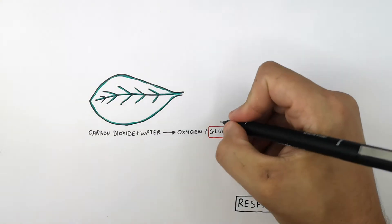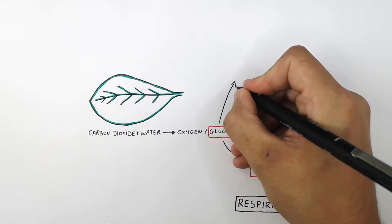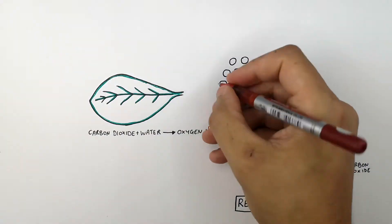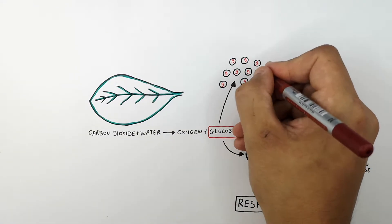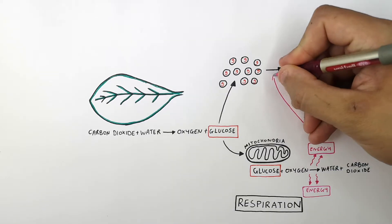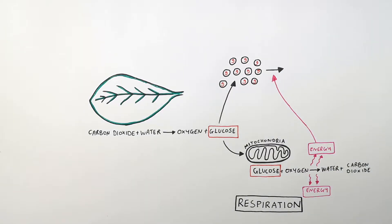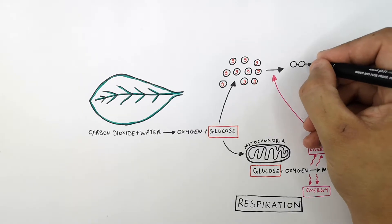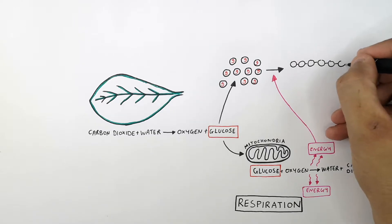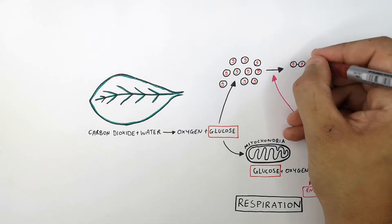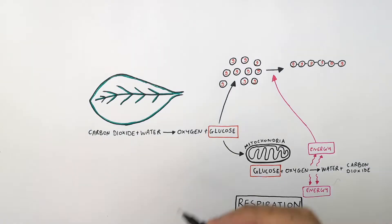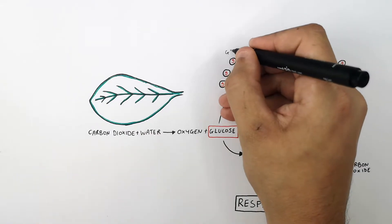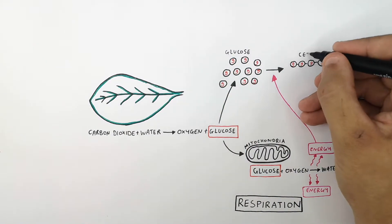Let's now describe how glucose is used to form other substances in the plant. What I'm drawing here are glucose molecules — these are monomers of glucose. The energy released by the mitochondria during respiration is used to convert glucose into the polymer cellulose, by making bonds between glucose molecules.